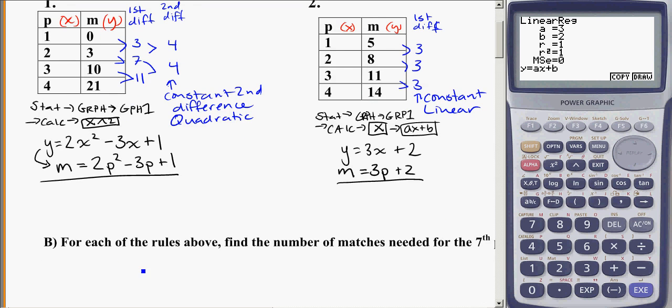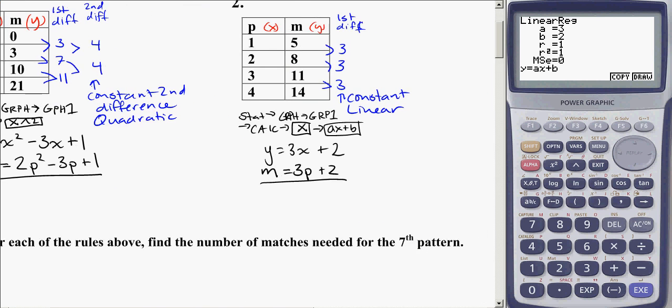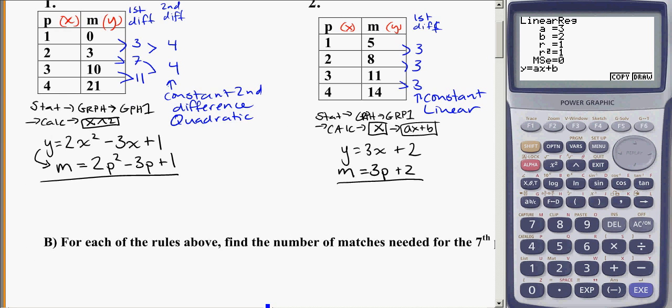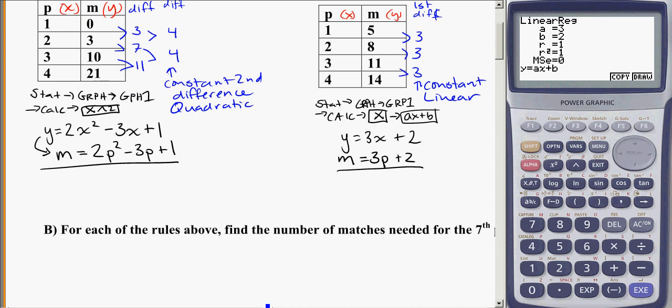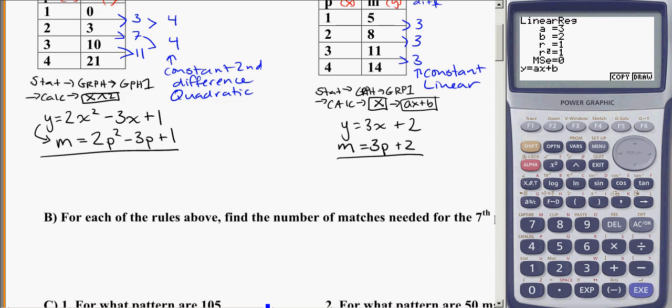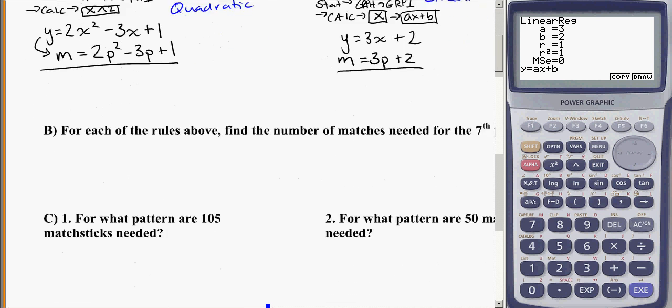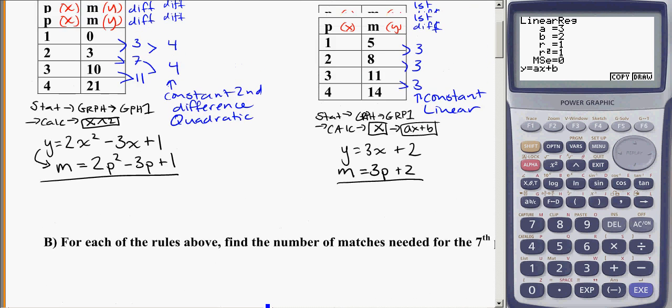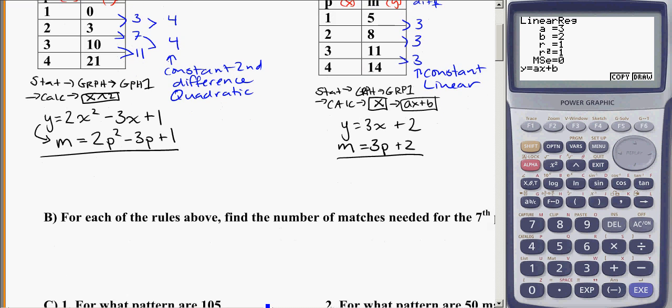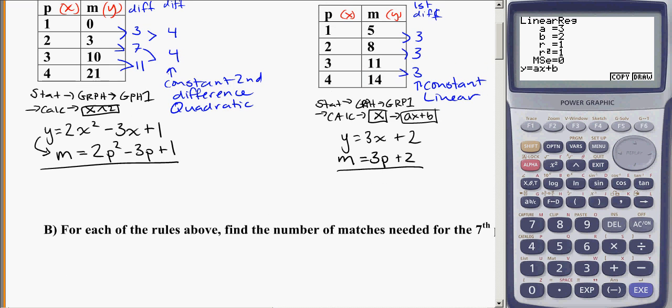So for each of the rules above, find the seventh pattern, or find the number of matches needed for the seventh pattern. In this case, we're going to be refreshing how to use the calculator to find particular values. So let's take a look at equation one, this quadratic, and then we'll look at equation two, the linear.